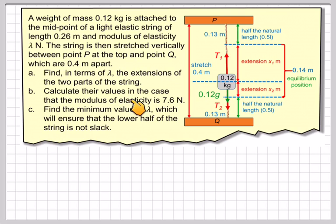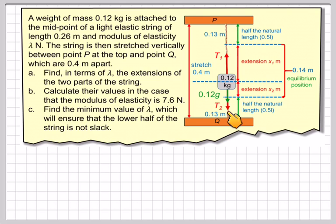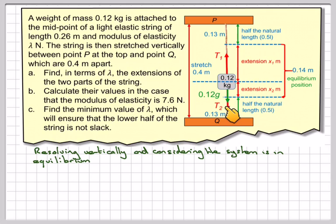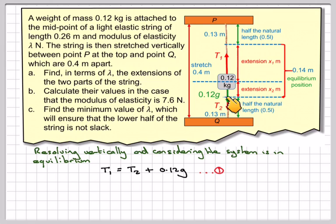We also need to calculate the values when the modulus of elasticity is 7.6 Newtons, i.e. lambda equals 7.6. And we need to find the minimum value of lambda so that the lower half of the string will not go slack. Resolving vertically, we have T1 acting upwards and T2 plus 0.12g acting downwards, so T1 = T2 + 0.12g. We call that Equation 1, since the system is in equilibrium with no acceleration.